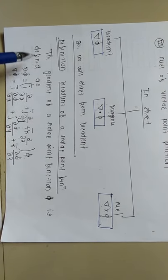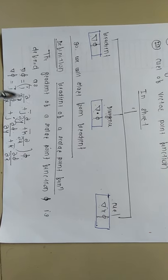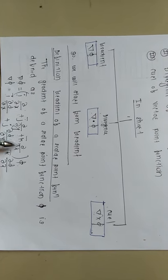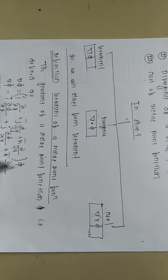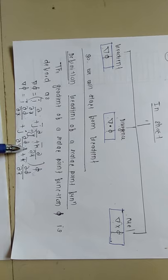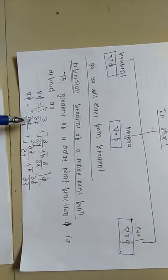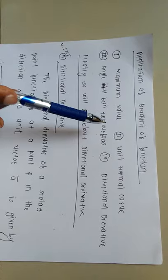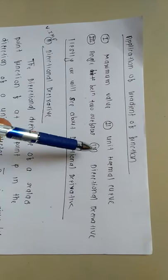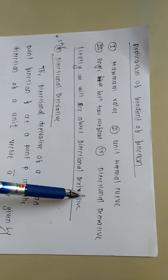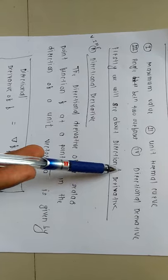What is the meaning of gradient of a scalar point function? The gradient of a scalar point function phi is defined as del phi, where del is i ∂/∂x plus j ∂/∂y plus k ∂/∂z operated on phi. There are some applications of the gradient: finding the maximum value at a particular point, finding the unit normal to a curve, finding the angle between two surfaces, and finding the directional derivative.